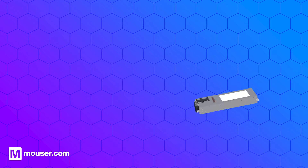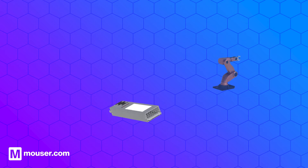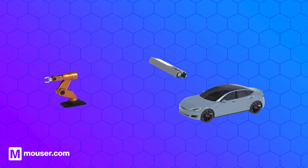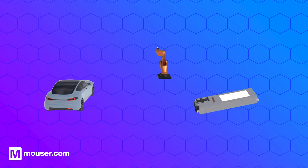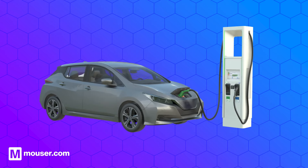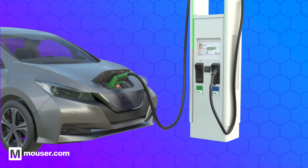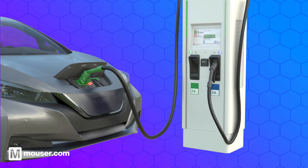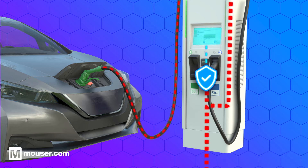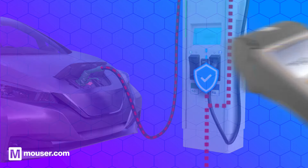You'll often find digital isolation in industrial products like power converters, industrial automation systems, and electric vehicles. Let's take an electric vehicle charger for instance. Digital isolation ensures that the high voltage charging circuit is safely isolated from the low voltage control circuitry and operator panel.